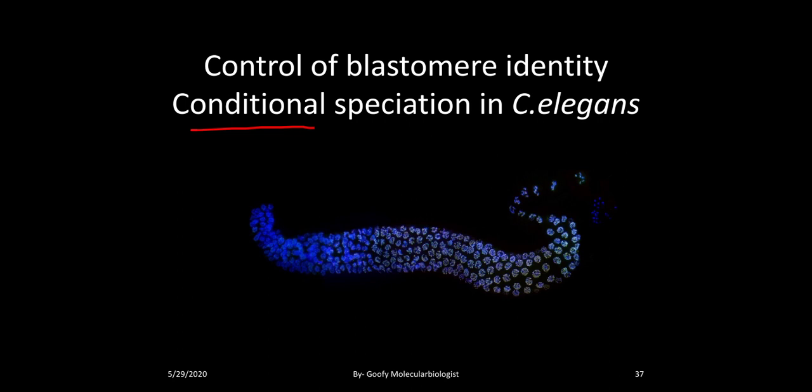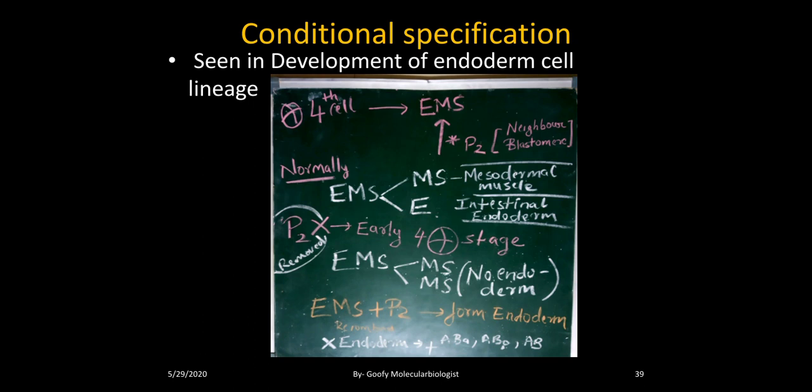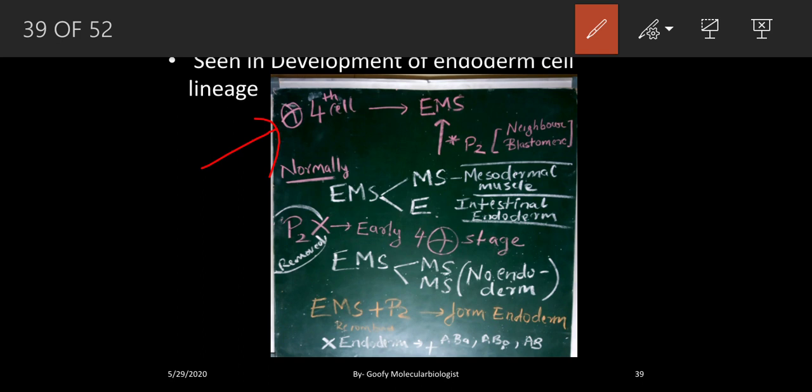The control of blastomere identity is controlled by both autonomous specification, which we have already discussed, and conditional specification. This conditional specification is seen in the development of the endoderm cell lineage. During the four-cell stage, the EMS cell is being activated — I'd request you to go back to the cell lineage chart to see where EMS and P2 cells are located.